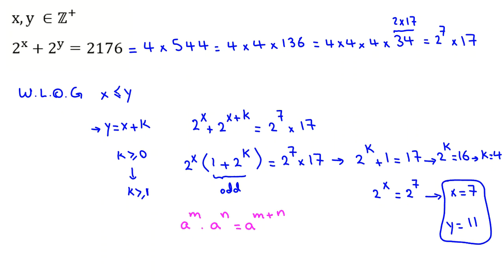But here, we said without loss of generality x is less than or equal to y. But x can also be greater than y. So the other answer, because it is symmetric with respect to x and y, is x equals 11 and y equals 7.